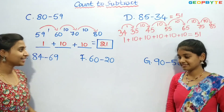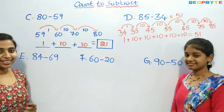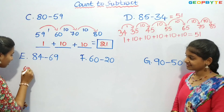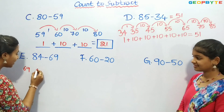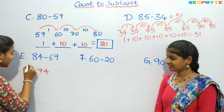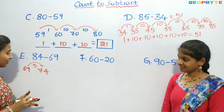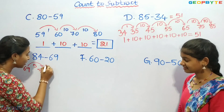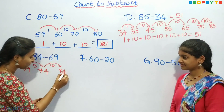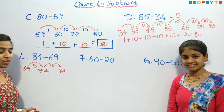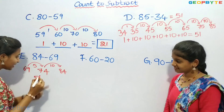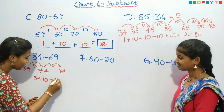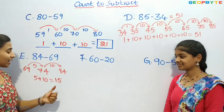Children, now let us see the next example: 84 minus 69. First, let us start with 69. From 69, let us jump 5 steps — it becomes 74. 69 plus 5 is 74. Now let us move 10 steps forward: 74 plus 10 is 84. We got 84. So, 5 plus 10 is 15. Children, 84 minus 69 is equal to 15.